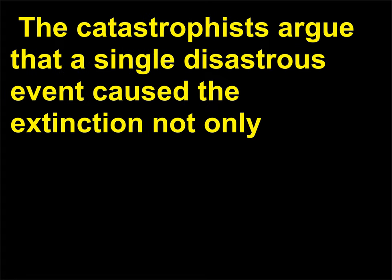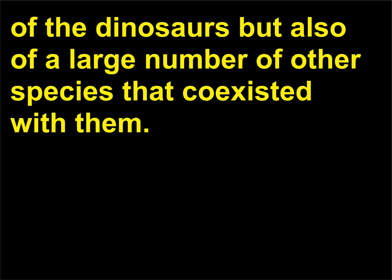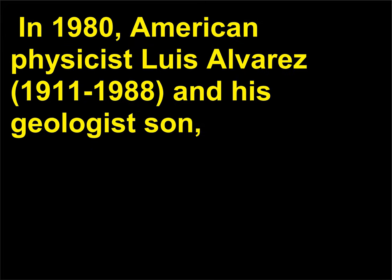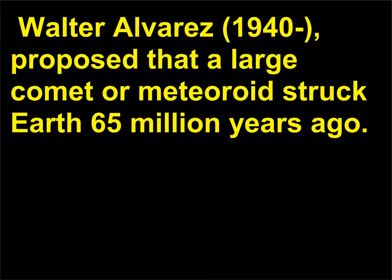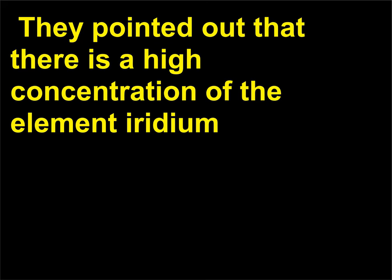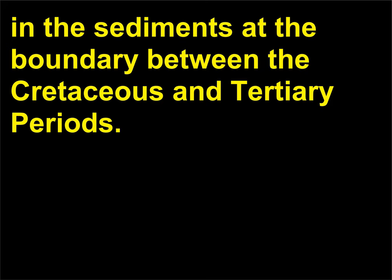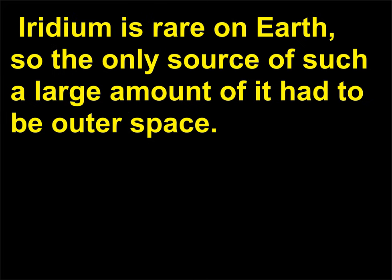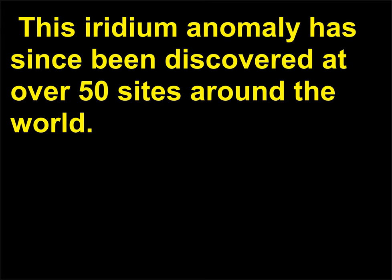The catastrophists argue that a single disastrous event caused the extinction not only of the dinosaurs but also of a large number of other species that co-existed with them. In 1980, American physicist Luis Alvarez (1911–1988) and his geologist son Walter Alvarez (born 1940) proposed that a large comet or meteoroid struck Earth 65 million years ago. They pointed out that there is a high concentration of the element iridium in sediments at the boundary between the Cretaceous and Tertiary periods. Iridium is rare on Earth, so the only source of such a large amount had to be outer space. This iridium anomaly has since been discovered at over 50 sites around the world.